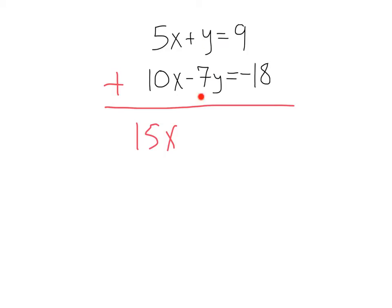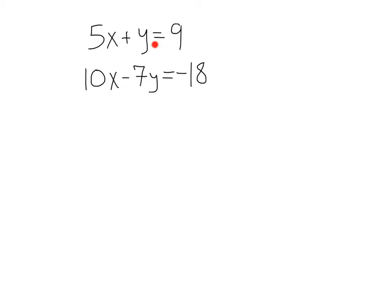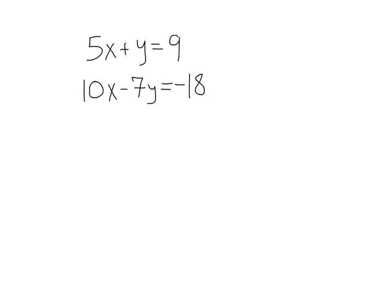Wait a minute. y minus 7y does not eliminate the y variable. That would be negative 6y, but we've got a problem. We didn't eliminate anything. We can't continue. Okay, here's what we're going to do in this case. If we ever see that something is not going to eliminate, we can multiply an equation to make it so that something does eliminate. So, looking at our equation here, I can see that if this was a plus 7y, then the negative 7y would eliminate the y variable.